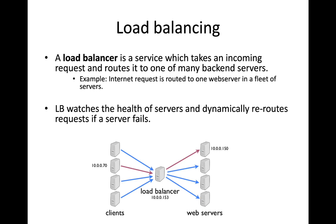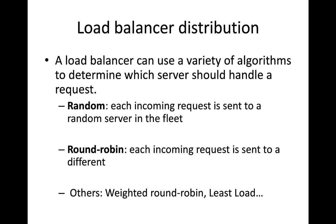The load balancer then decides which server in the fleet of servers should handle that request. The load balancer is pretty smart — it'll attempt to distribute those requests evenly across your web servers. And it will monitor the health of the servers in that fleet. If it sees that a server has failed, it will stop routing requests to that failed server, automatically rerouting requests around systems which have failed.